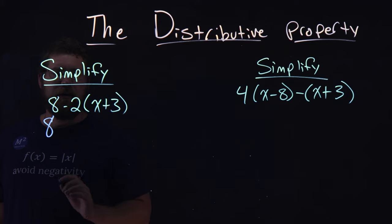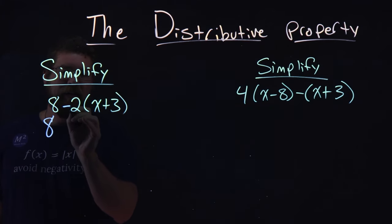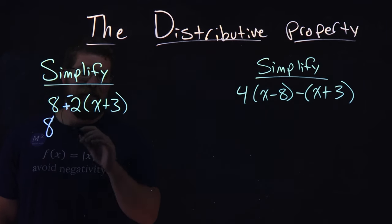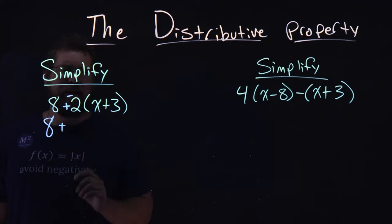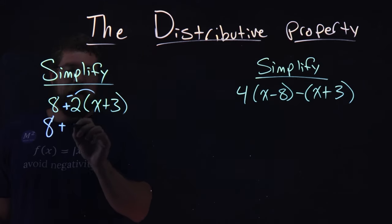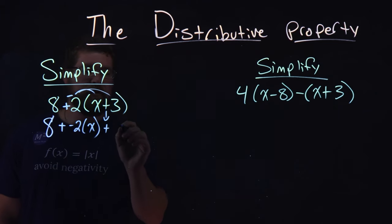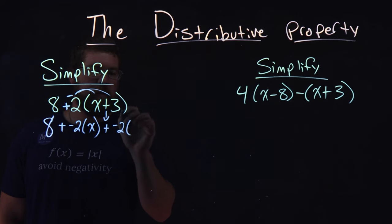So I leave the 8 here, and this is how I prefer to do it—I take the minus 2, and I'll write this as plus a negative 2 right there to make the distributive easier. That's just how I like to see it. Minus 2 times the x. Bring down the plus sign. And then minus 2 times the 3.